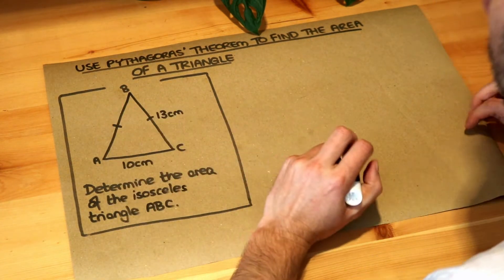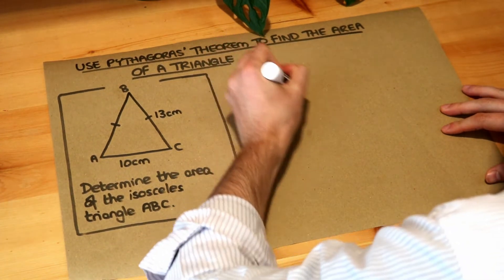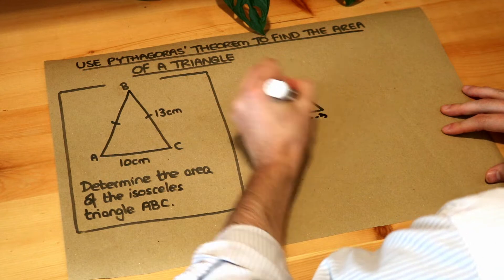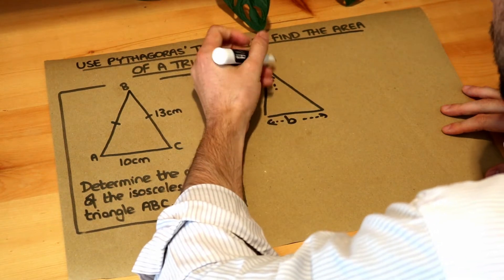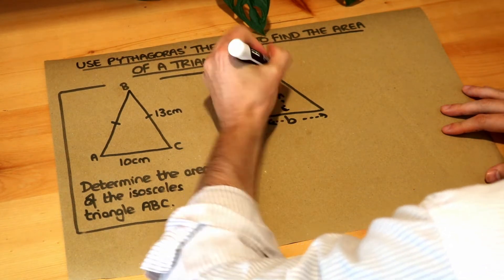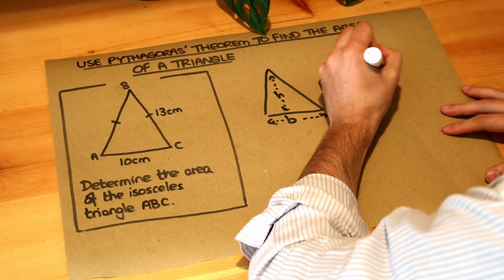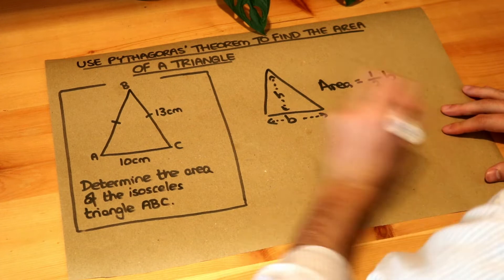How in general do we find the area of a triangle? If we had the base, let's call it B, and the height of the triangle, let's call it H, then the area is half times the base B times the height H.